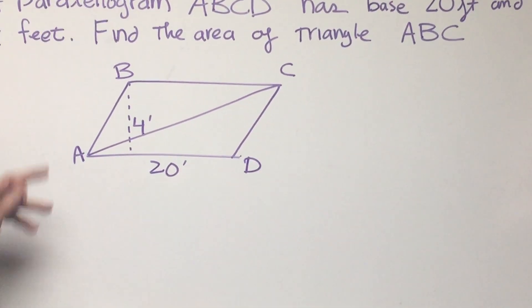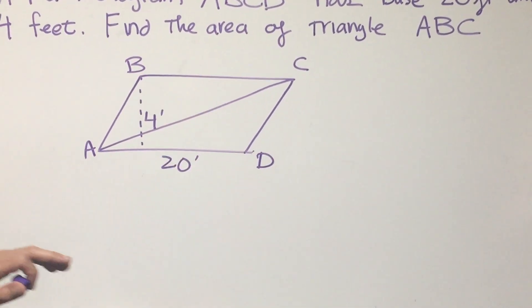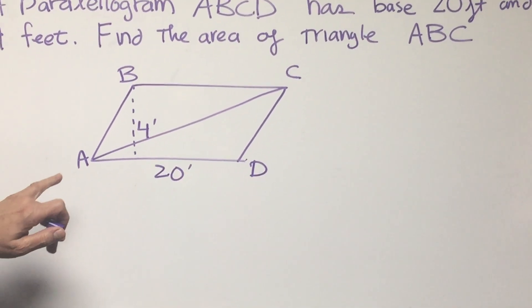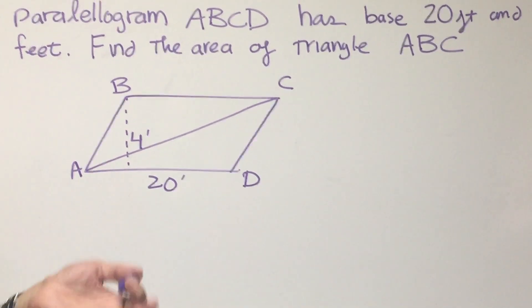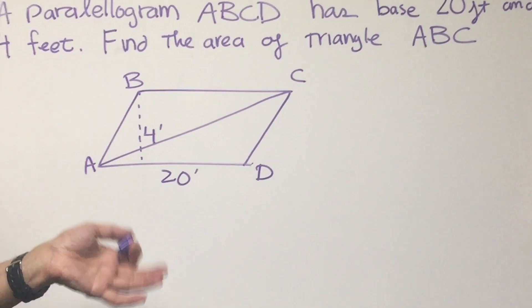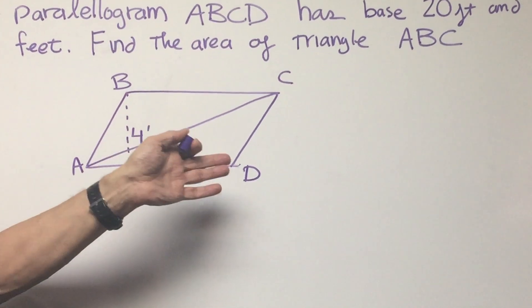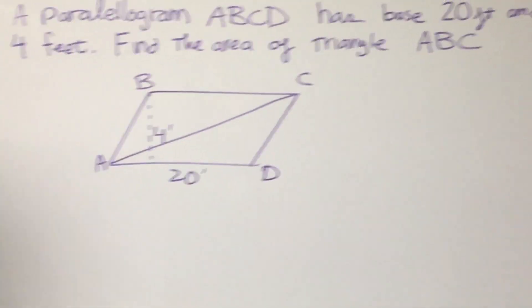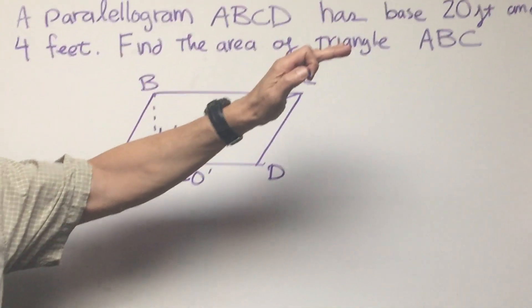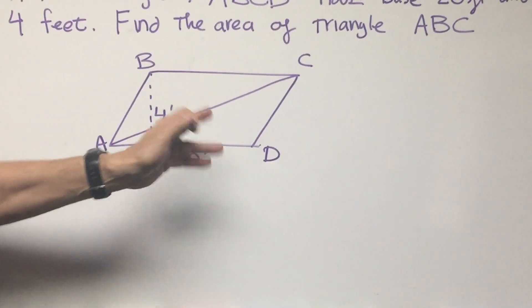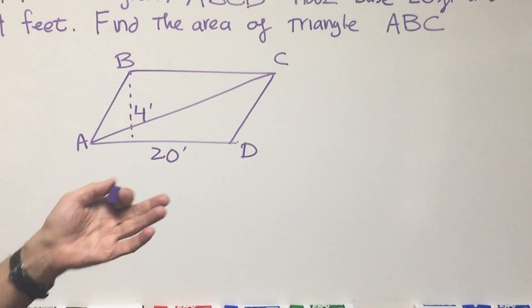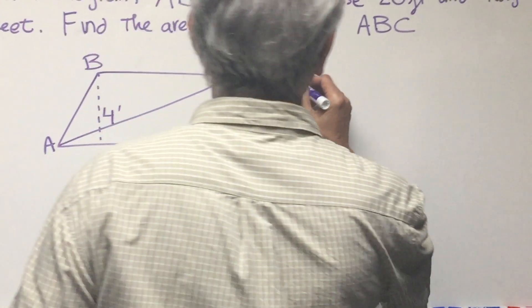So here is parallelogram ABCD. We want to find the area of triangle ABCD. Well, first, here's the strategy. We're going to find the area of the parallelogram, and you can see that if we slice it in two with this diagonal, half of that value is going to give us the area of triangle ABCD.